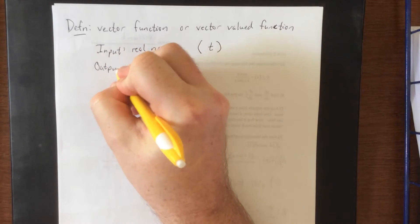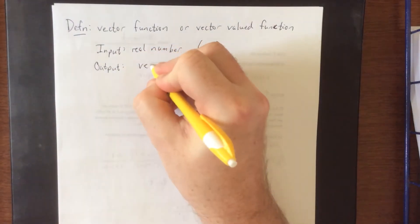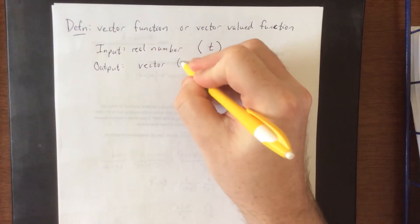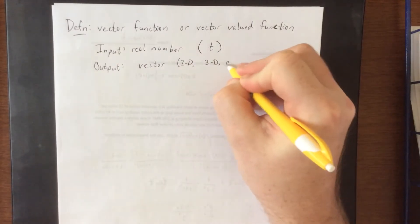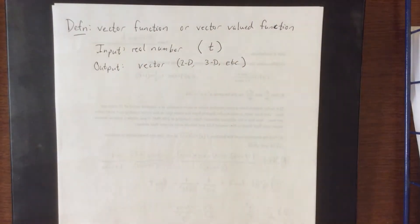The output is going to be a vector. Now this vector could be a vector in two dimensions, or it could be a vector in three dimensions, or technically we could go into higher dimensions, but because we're trying to keep it relevant to the real world, we'll stick with two-dimensional and three-dimensional.